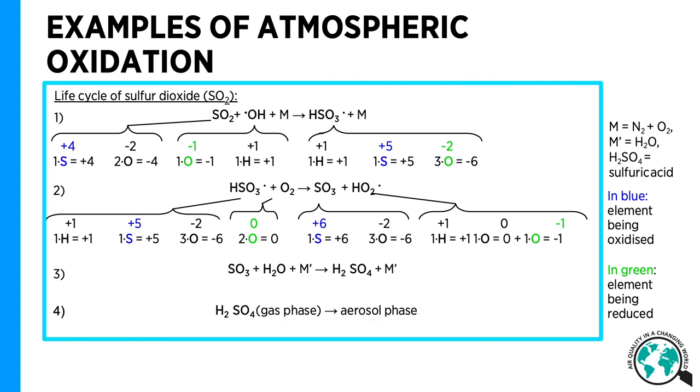Since sulfuric acid has a low vapor pressure, it condenses immediately when formed in the gas phase.